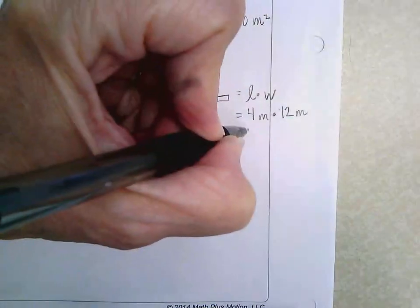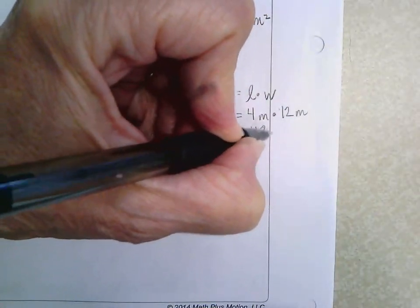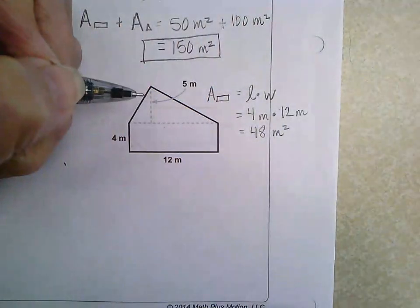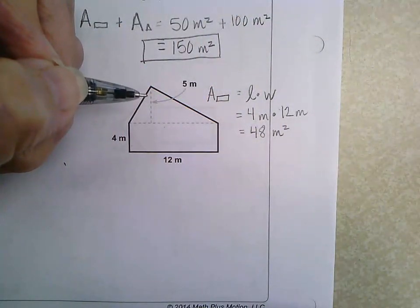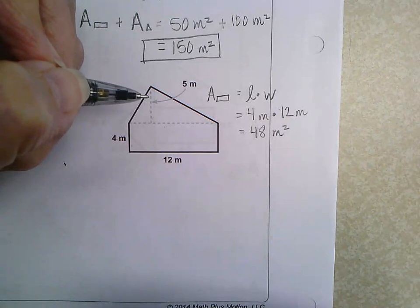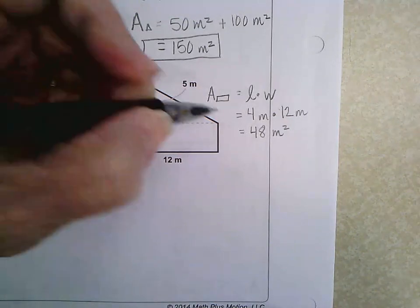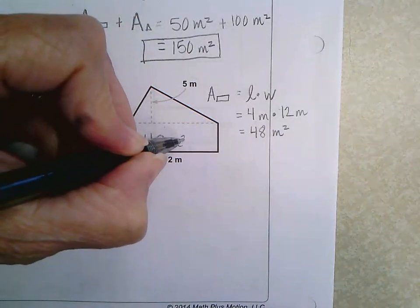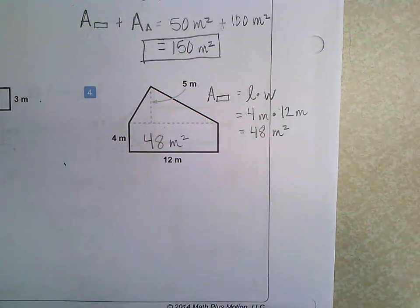which equals, well, 24 and 24 is 48. Right. 48 meters squared. Okay. We have the rectangle now.